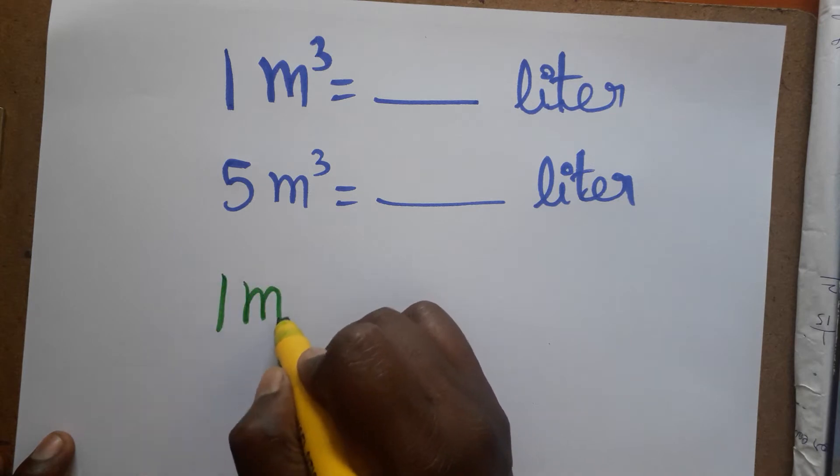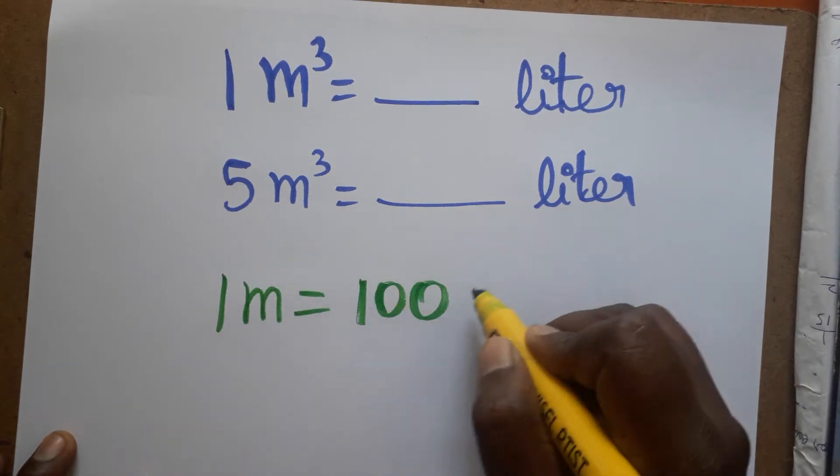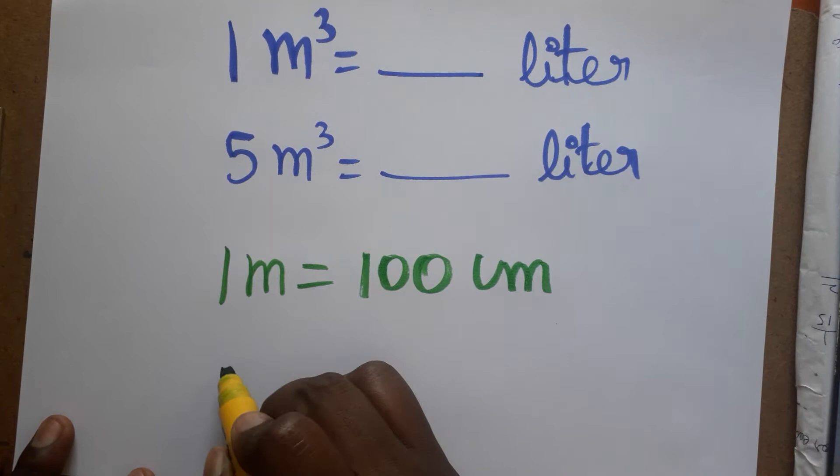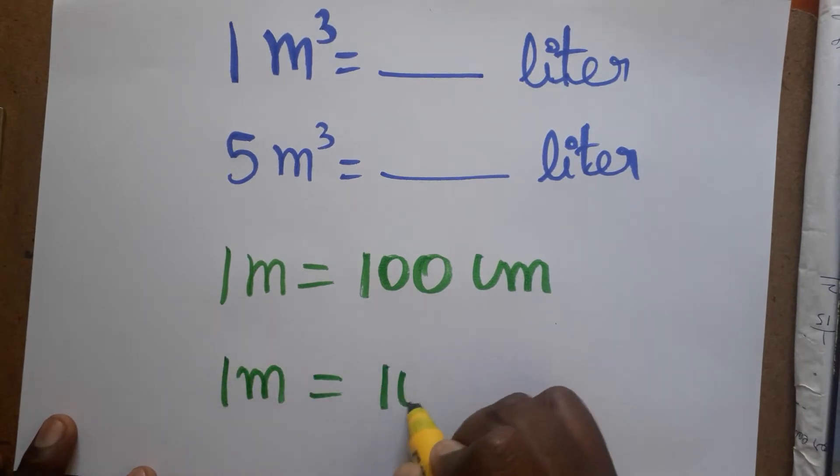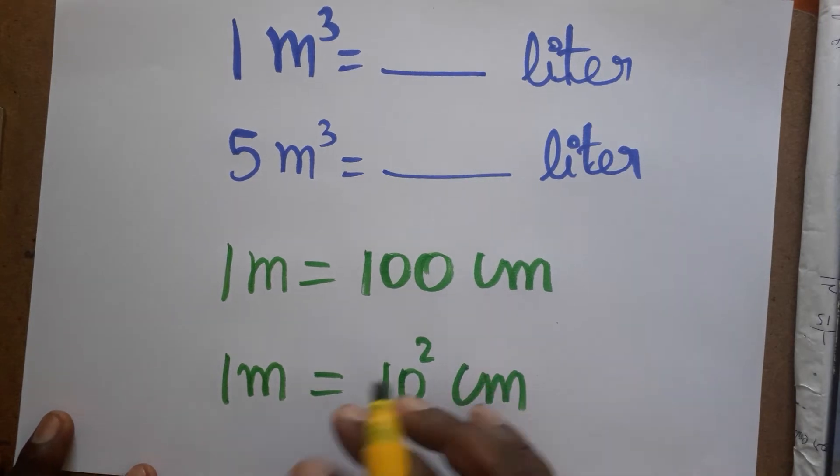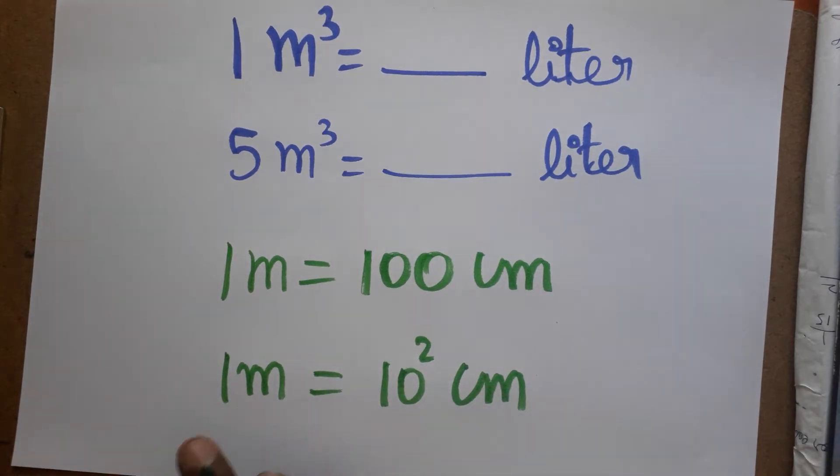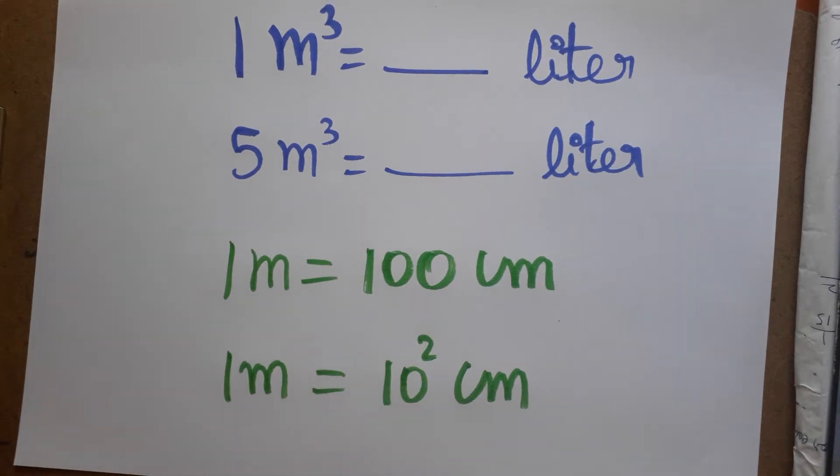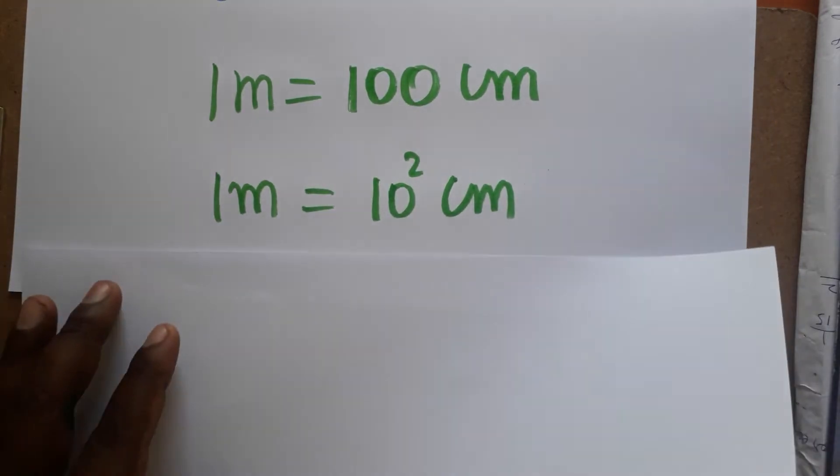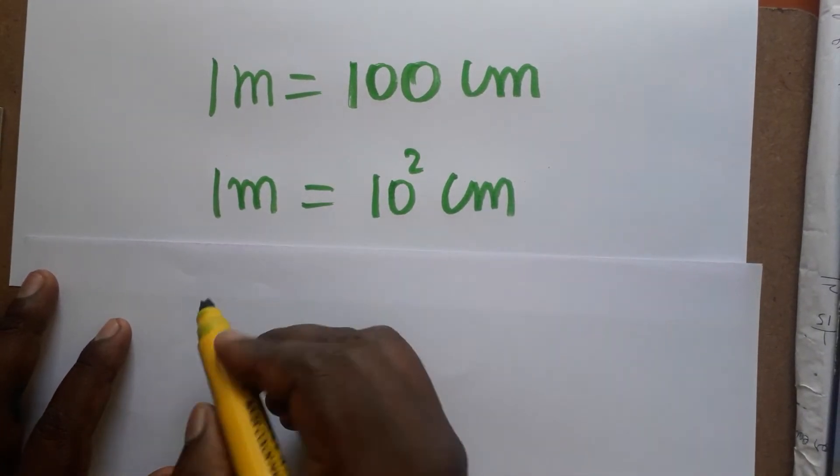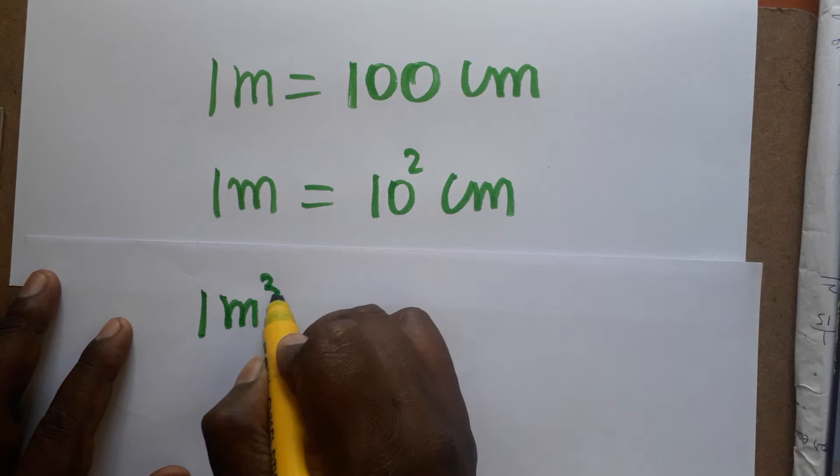1 meter is equal to 100 centimeter. 1 meter is 100, we can write 10 squared, which is 10 into 10 centimeter. Now we are going to write as meter squared, so 1 meter, meter cube. The same equation, you can cube on all the sides, so 1 meter cube is...